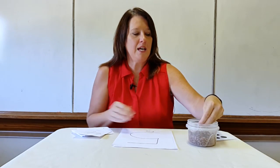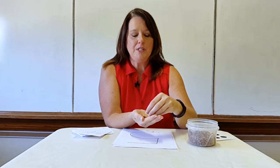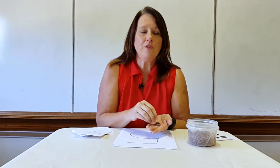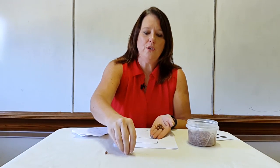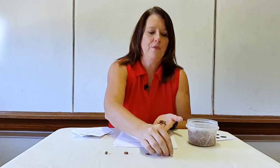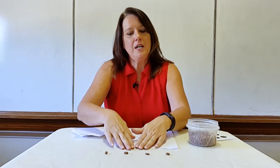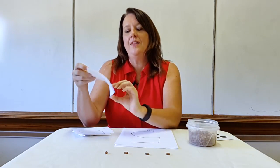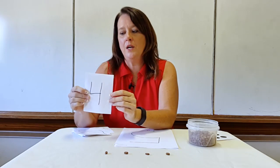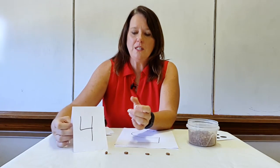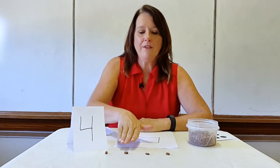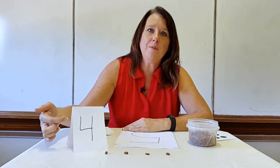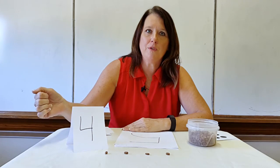I have my counters, and today we're using pinto beans. I would say, 'Boys and girls, let's count to four. Count with me: one, two, three, four. How many are in my group today, boys and girls, in my row?' Four. And then I would show them the number four. 'Boys and girls, this is the number four. When we have four beans, this is how we show that on a piece of paper. This is the number four.'